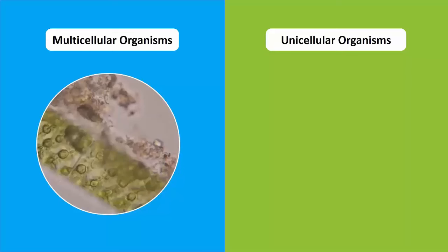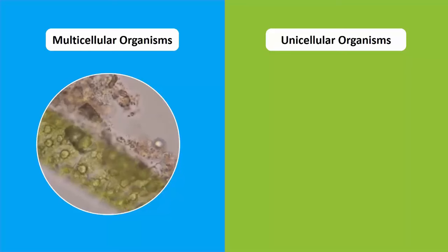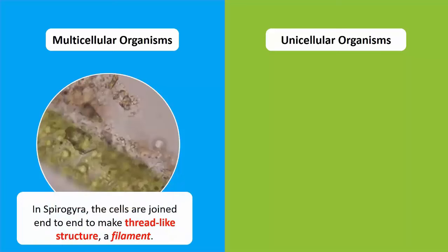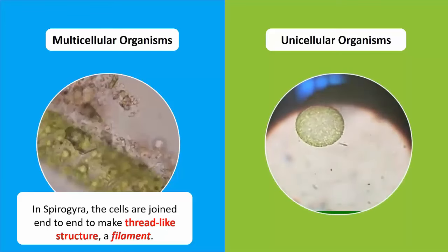Multicellular organisms such as spirogyra are made up of fewer cells, which is why they cannot be seen by the naked eye. In spirogyra, the cells are joined end to end to make thread-like structures known as filaments.